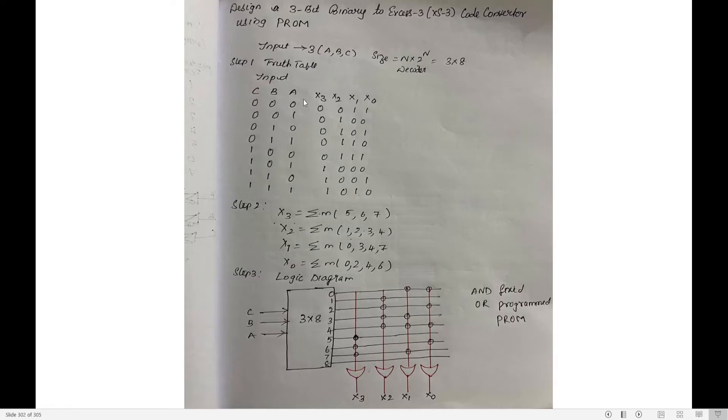Now, convert this binary to XS3. What is XS3? Add 3 to it. 0 plus 3 is 3, so output is 0011. 1 plus 3 is 4, so 0100. 2 plus 3 is 5, so 0101. 3 plus 3 is 6, so 0110. 4 plus 3 is 7, so 0111. 5 plus 3 is 8, so 1000. 6 plus 3 is 9, so 1001. 7 plus 3 is 10, so 1010.